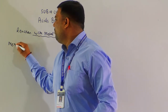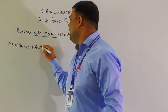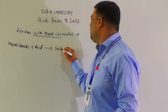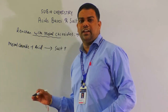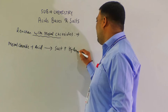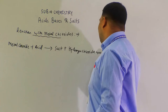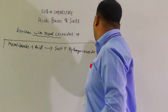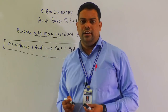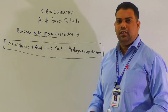The general reaction is: metal chloride + acid → salt + hydrogen chloride gas. So the by-product of a metal chloride reacting with an acid is HCl gas.